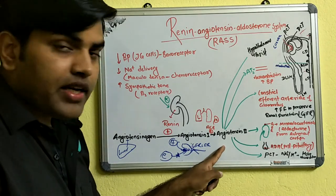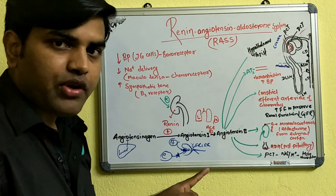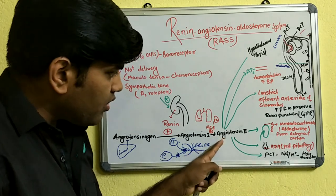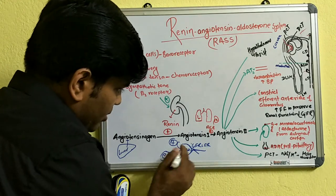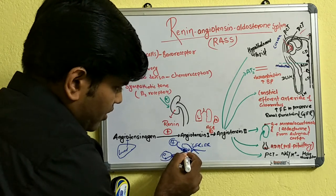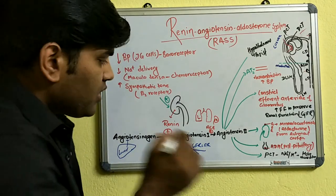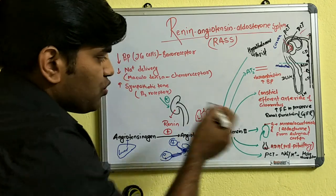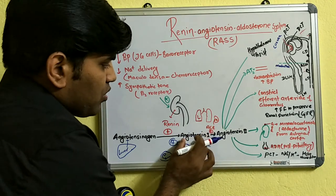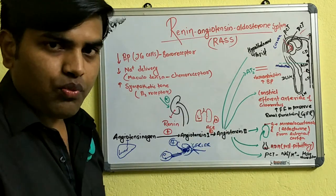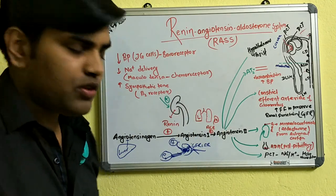Clinically, in a diabetic patient who develops microalbuminuria and diabetic nephropathy, if we inhibit angiotensin-2, the efferent arteriole constriction is relieved — it dilates — allowing more blood flow and less pressure across the glomerulus, so less protein leaks into the urine. This is why angiotensin-converting enzyme (ACE) inhibitors are useful in diabetic nephropathy: by inhibiting ACE, angiotensin-1 is not converted to the active angiotensin-2, reducing glomerular hypertension and microalbuminuria.